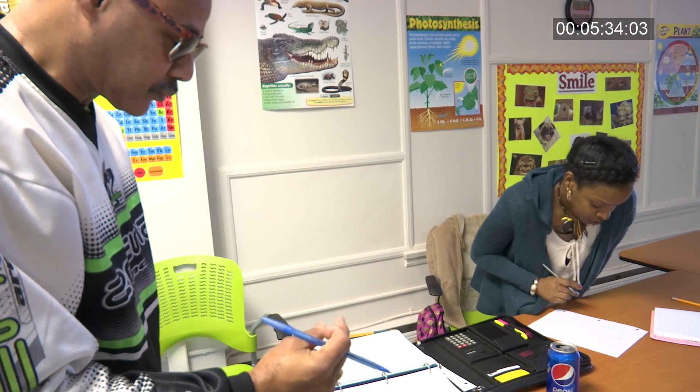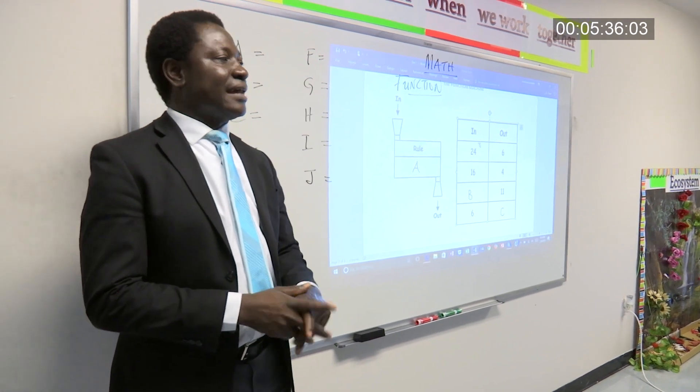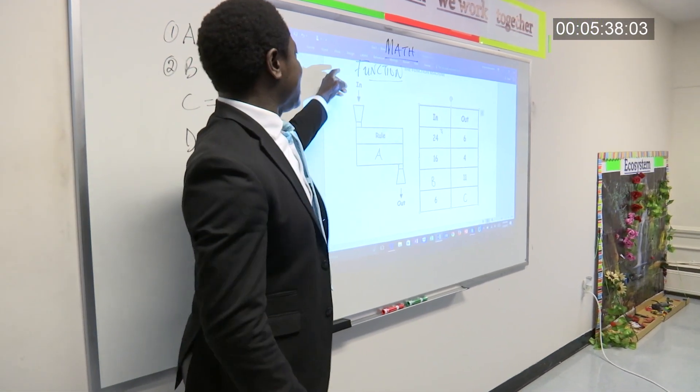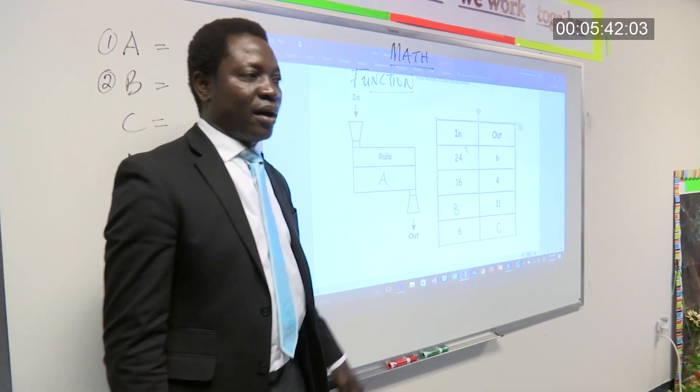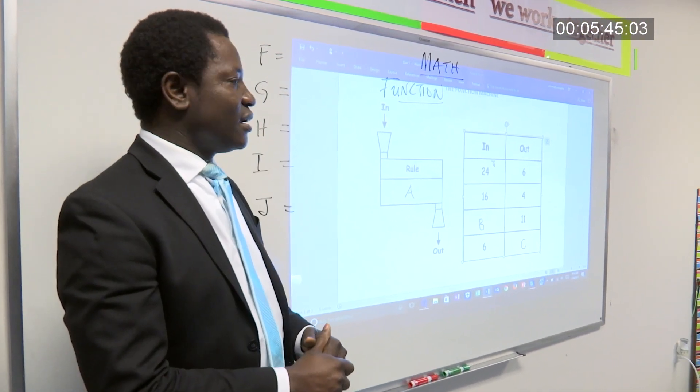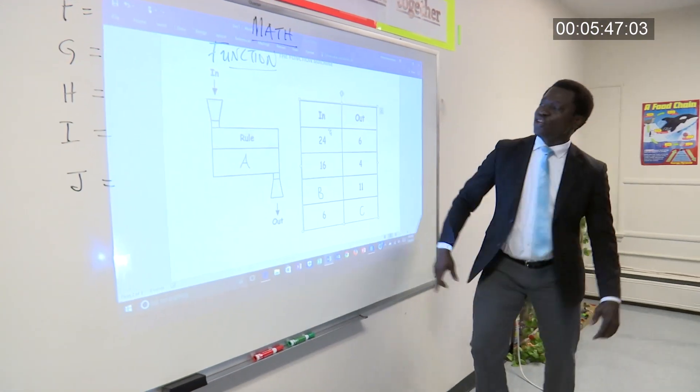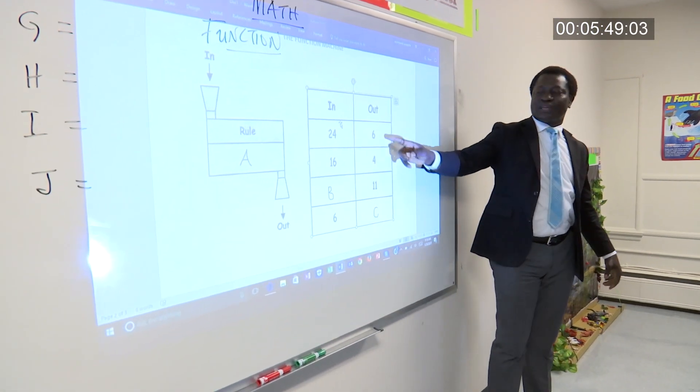So, the function machine, we said, when you have an input, you put in something, you get something out. So, let's look at this machine. When you put in 24, what do you get out?